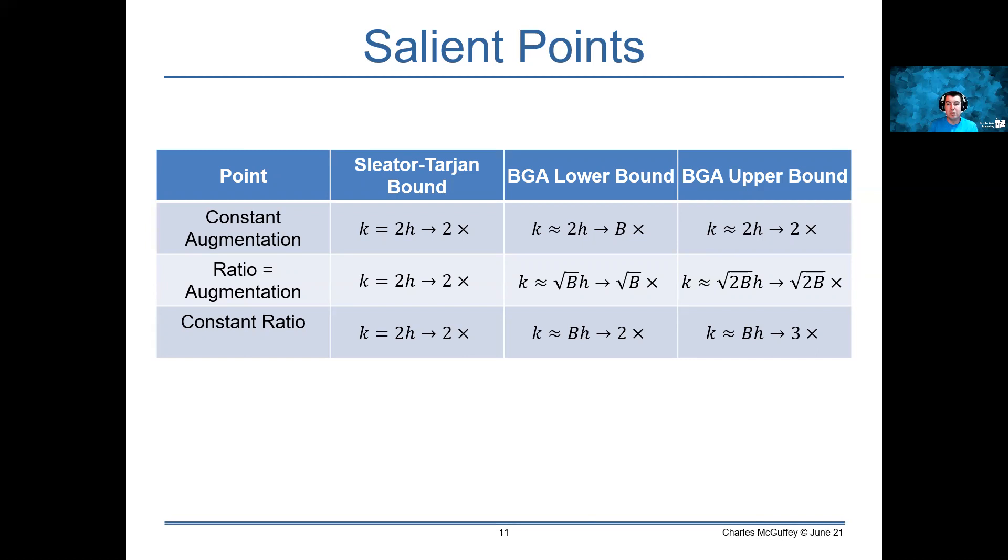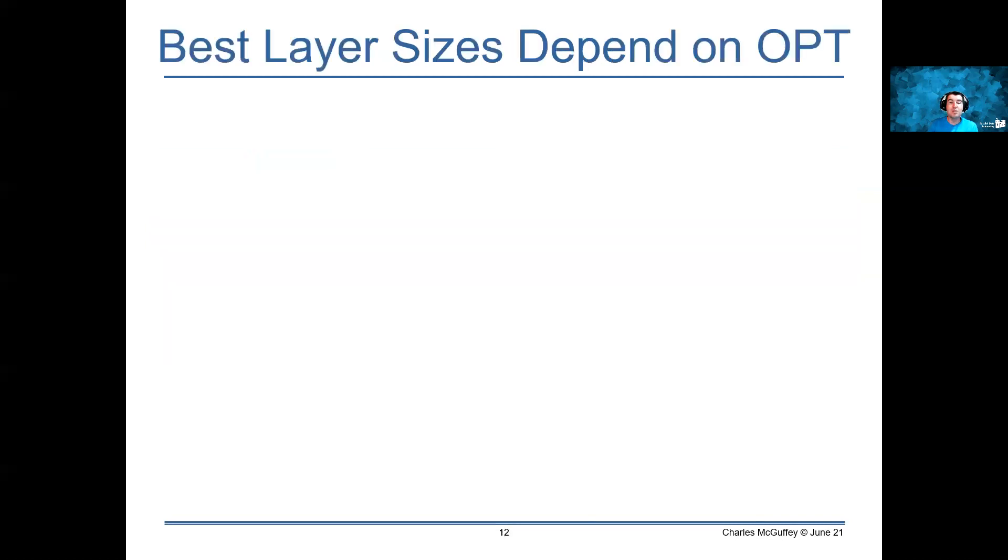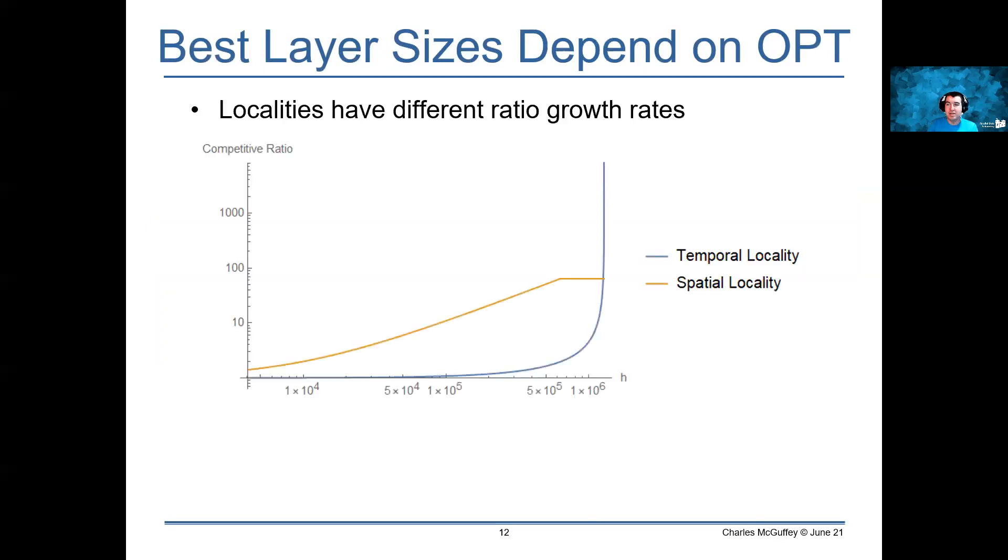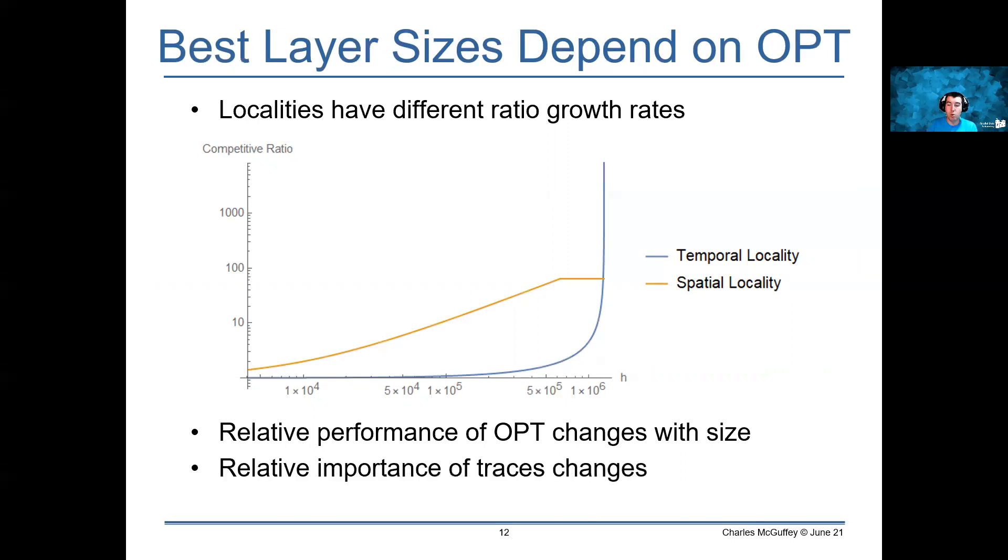But as we look at competitive ratios in this problem, we find something really interesting. Because of the fact that in the block granularity aware problem, localities have different growth rates, the relative performance of the optimal cache changes for traces that have different amounts of locality. This means that the relative importance of performance on those traces for our policy changes, which means that competitive ratios are really not as effective for determining what the right thing to do is as they are in other caching problems, even with the problems they already have.